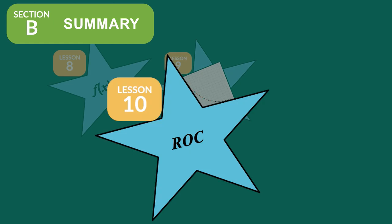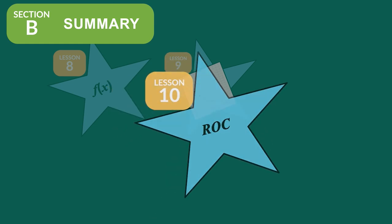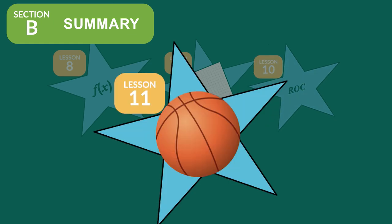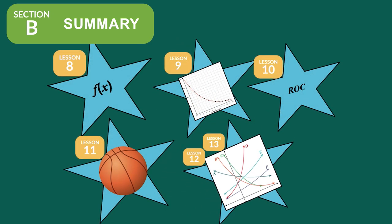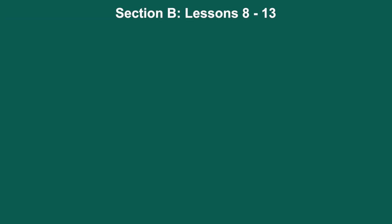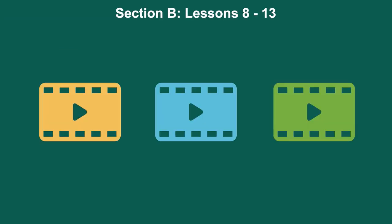Lesson 10 applies the concept of rate of change to exponential functions, and it uses linear functions as the comparison. Then in lesson 11, we allow students to really investigate — they check out the height of a bouncing ball and how it might be modeled using exponential functions. And finally, in lessons 12 and 13, students explore the effect that changing a and b have on the graphs of exponential functions and on other features of the graphs. The graphs of special note in this section are videos that are available to students.